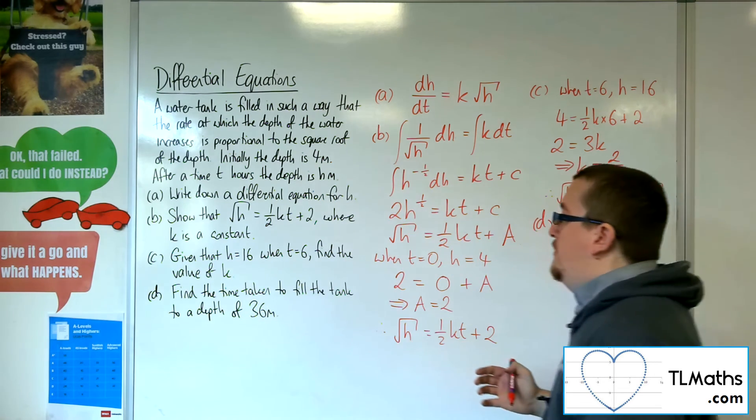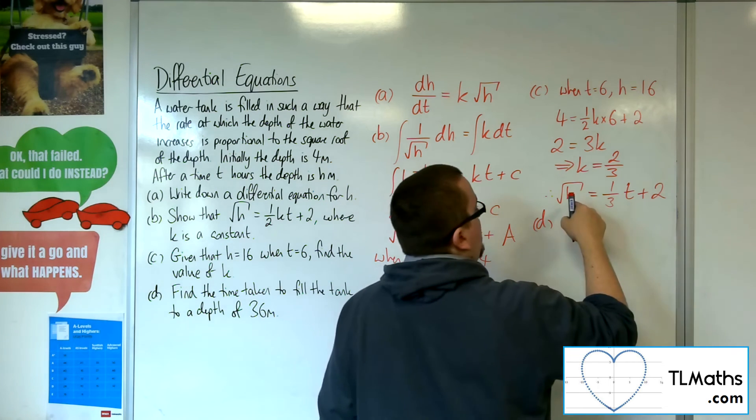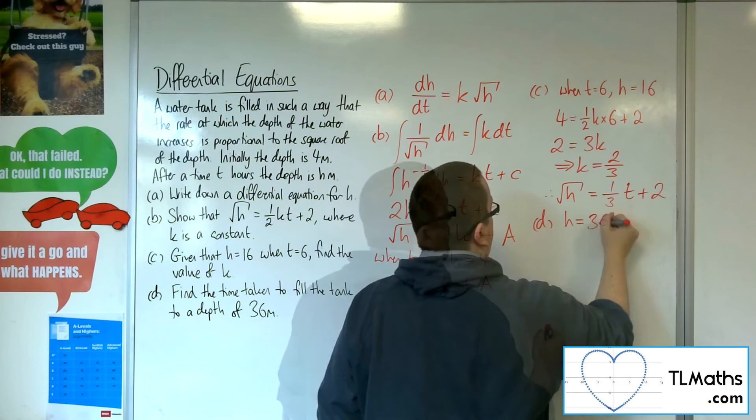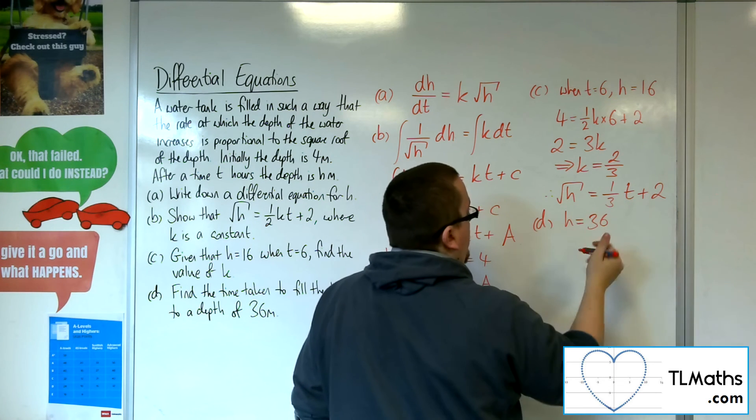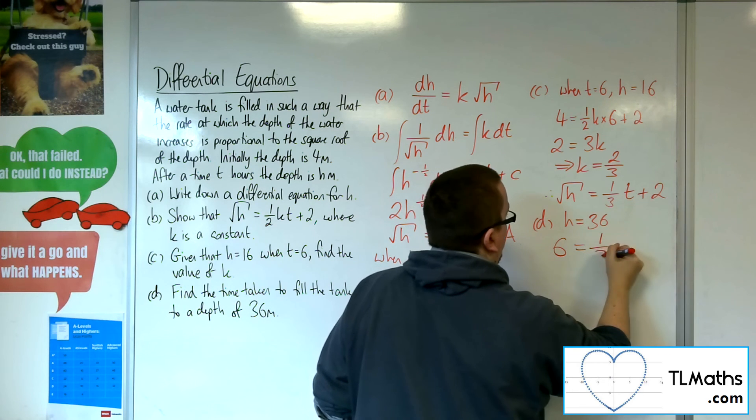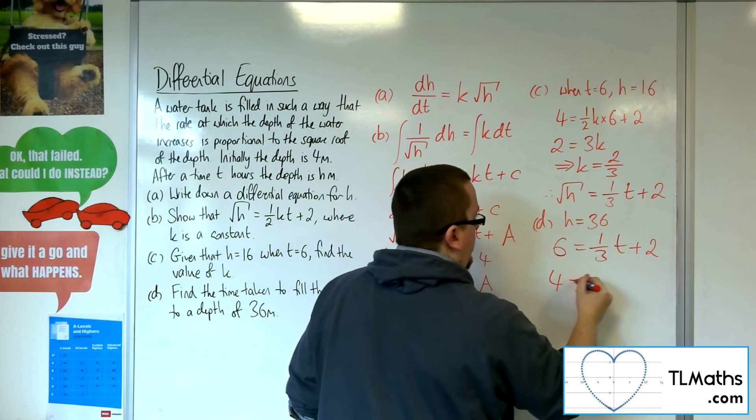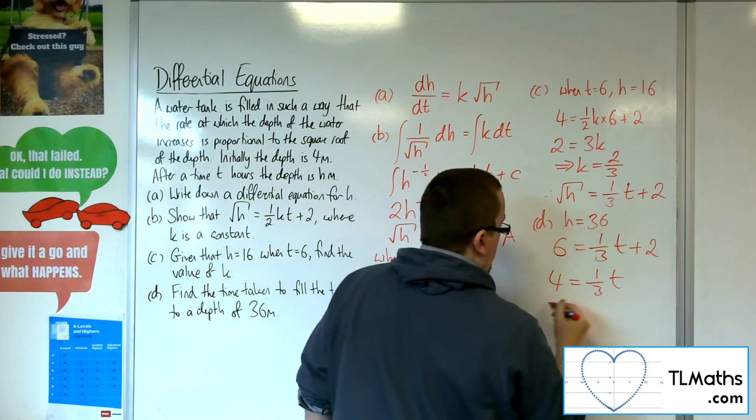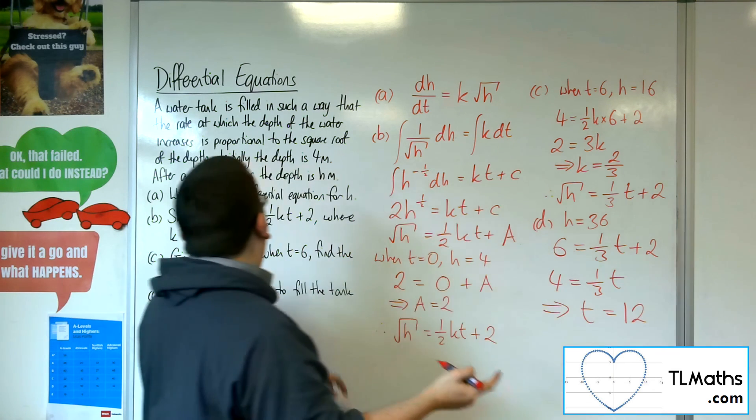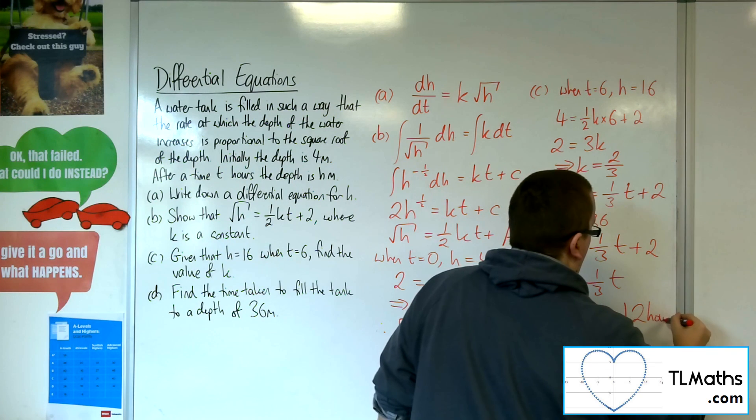Now, d, find the time taken to fill the tank to a depth of 36 metres. Well, if I want the depth to be 36, so h is 36. So we've got the square root of 36, which is 6, equals 1 third t plus 2. So now solving this equation, subtract the 2 from both sides, then multiply both sides by the 3. So t would have to be 12. And time is given in hours. So that would be 12 hours. And that would answer the last part of this worded differential equation problem.